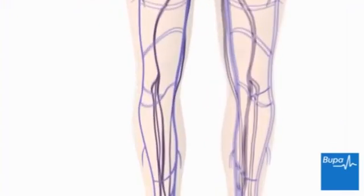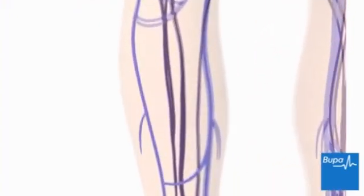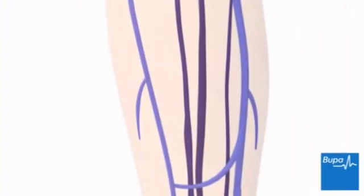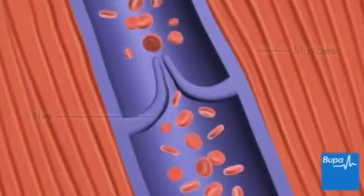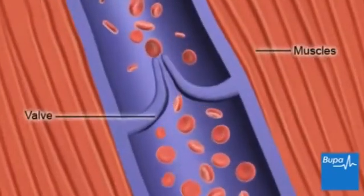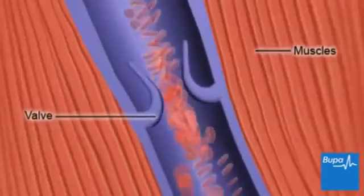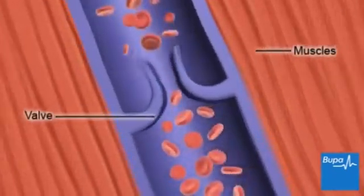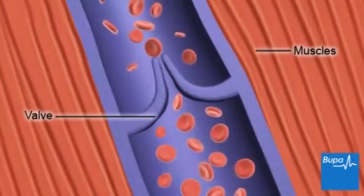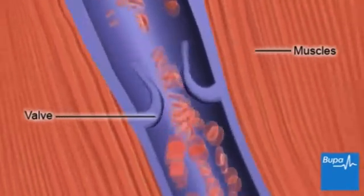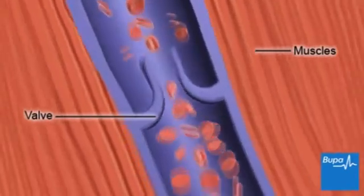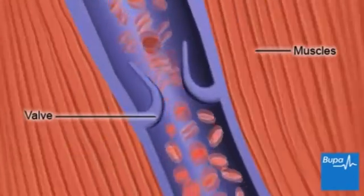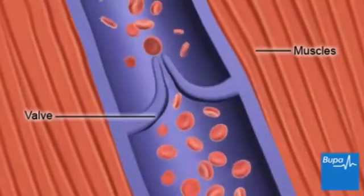The deep veins run between the muscles of the leg. Contractions of these muscles when we move our leg and ankle help to squeeze the blood back up towards the heart. The veins also have valves that prevent the blood from flowing back towards the feet.